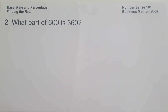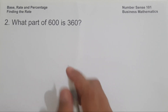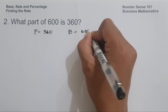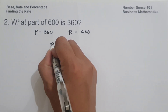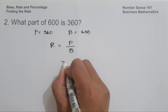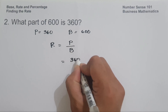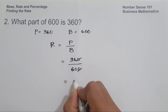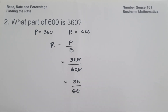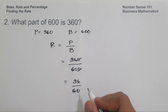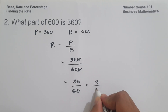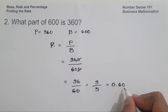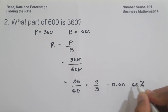On example number 2: What part of 600 is 360? So 360 is the percentage, and 600 is the base. Let us use the formula: rate equals percentage divided by base. So we have 360 over 600. Let us cancel the zero, giving us 36 over 60. Since 36 and 60 are divisible by 12, so 36 becomes 3 and 60 becomes 5. And 3 divided by 5 is 0.60. Written in percentage, that is 60%. And this will be our answer.